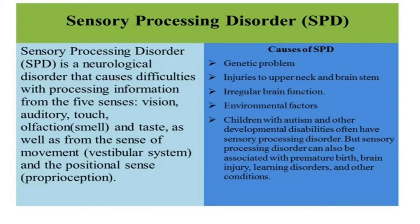A person with SPD may remain unresponsive to anything around them and may fail to respond to extreme heat, cold or pain. Now we will see the causes of SPD. There are four types: genetic causes, low birth weight, environmental factors and physical causes. Research indicates that children born of adults who have Autism Spectrum Disorder may be at higher risk for developing SPD.